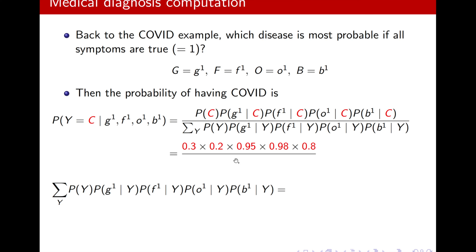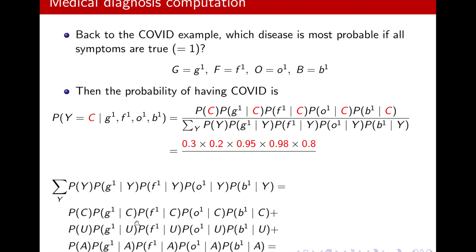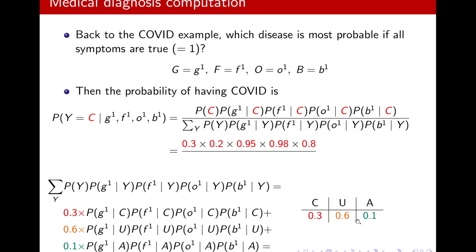And then, what about the denominator? Well, we know the formula. How to calculate this? Well, if I just expand it over Y, this means simply that I need to replace Y with C, with U, and with A, and then add them up. This is the definition of marginalization. How to calculate these? Here you are. So, for the first one, I need to calculate the value of C, U, and A. Here, they're written 0.3, 0.6, 0.1. I just replaced them.